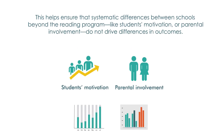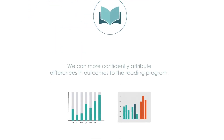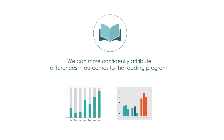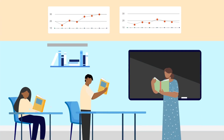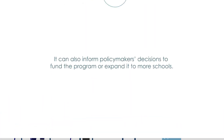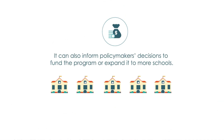In other words, we can more confidently attribute differences in outcomes to the reading program. This rigorous evidence can help schools decide whether to continue the program, adjust it, or adopt a new strategy. It can also inform policymakers' decisions to fund the program or expand it to more schools.